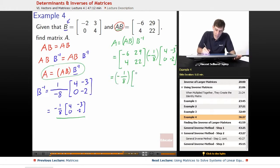So we've got negative 6, 29, 4, 22, times 4, negative 3, 0, negative 2. Okay, so still that fraction up at the front, negative 1 eighth times whatever comes out of this. So it will come out to be a 2 by 2.